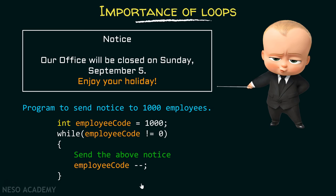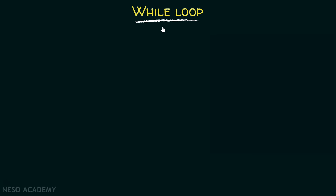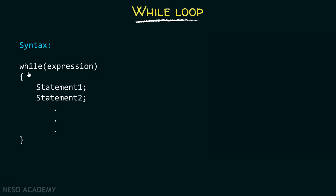Now let's try to understand what is a while loop, what is the syntax of while loop, and how it actually works. Here is the syntax: while, an expression, and the set of statements written immediately after the while loop. If the expression results in a true value, then the statements will get evaluated. After that, it will again check the condition, and if the expression still returns true, those statements will get executed again. It will continue to execute until the expression returns false.